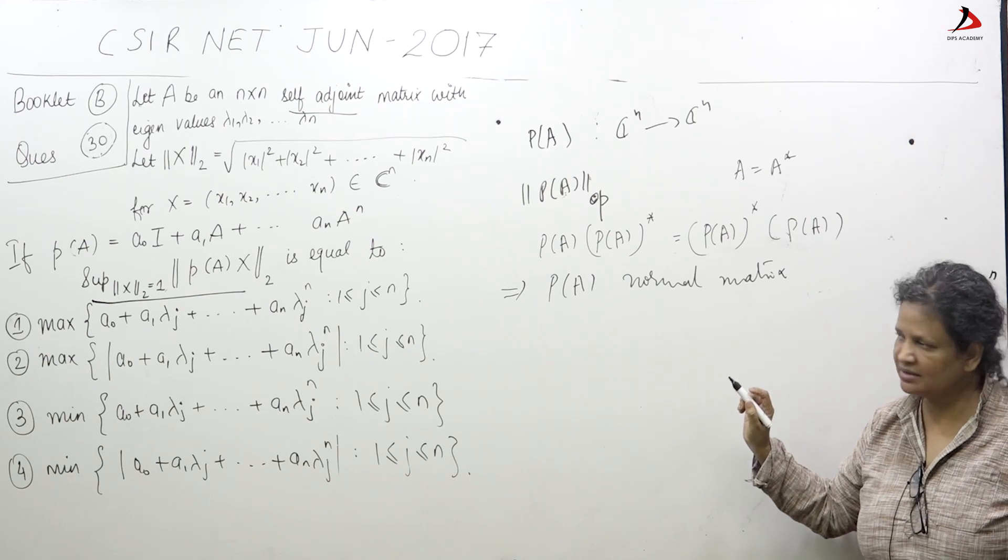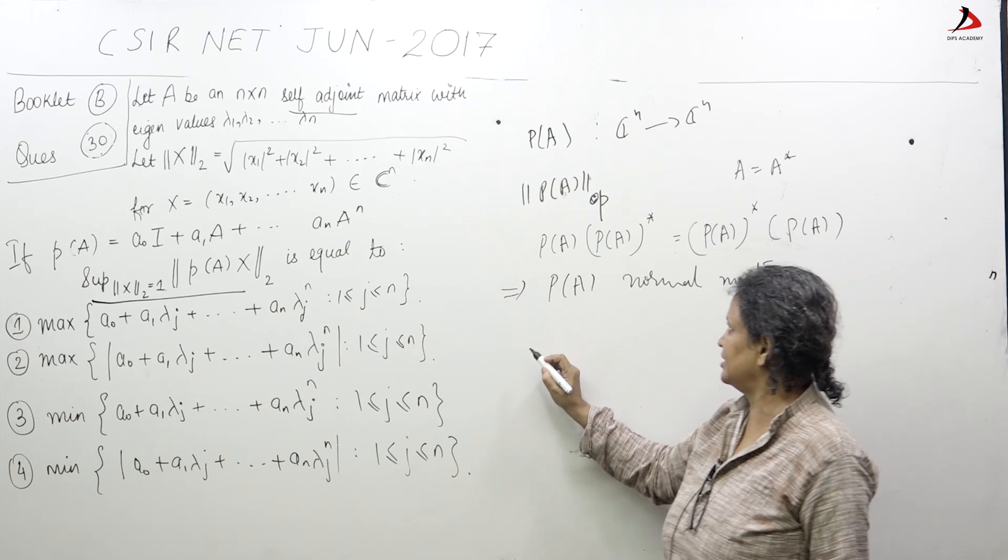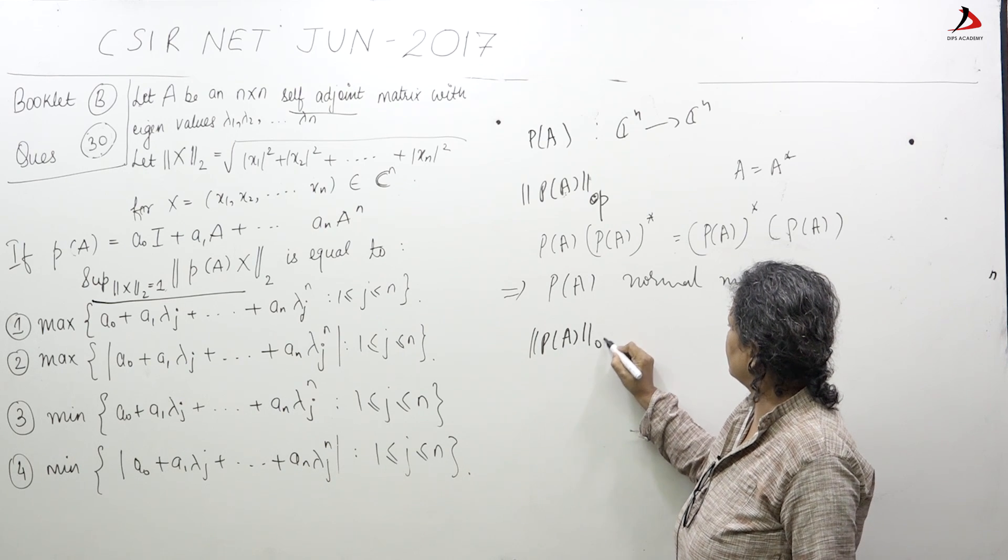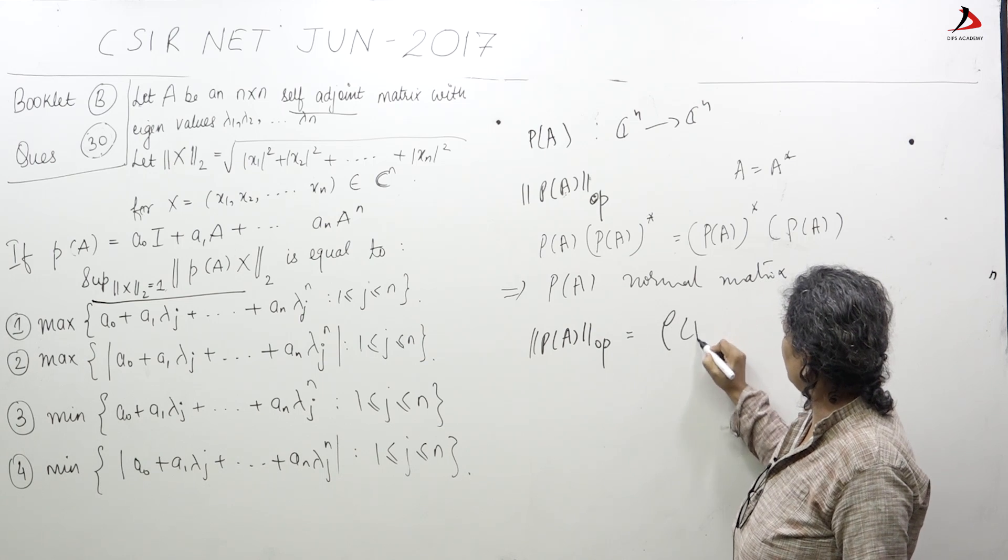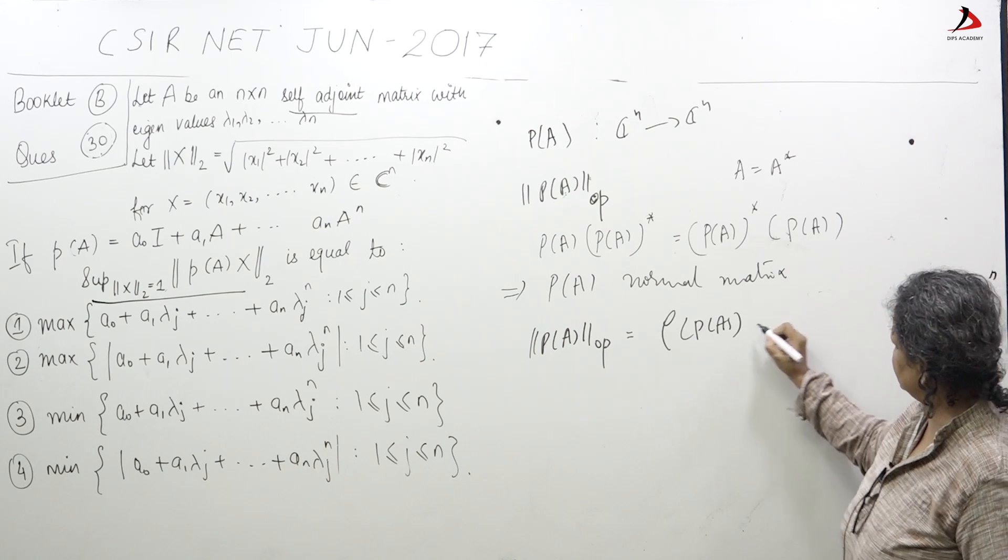For a normal matrix, the operator norm is same as spectral radius. That is, norm of P of A operator is equal to rho of P of A, which is the spectral radius. What does this mean?